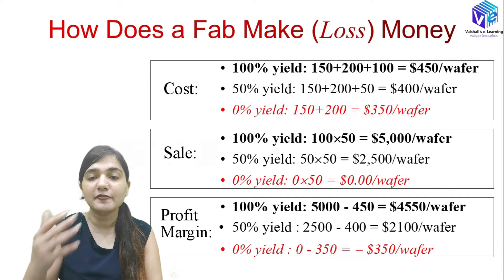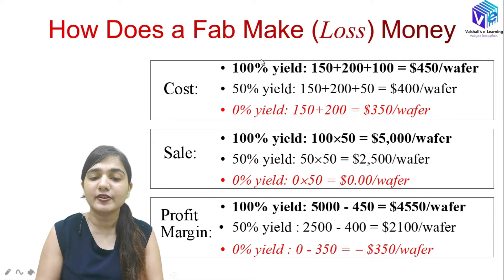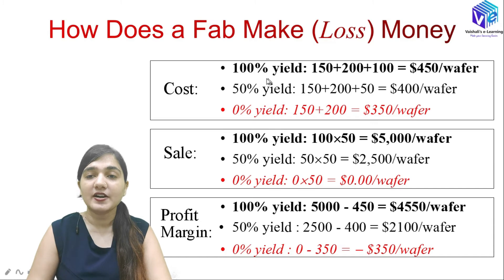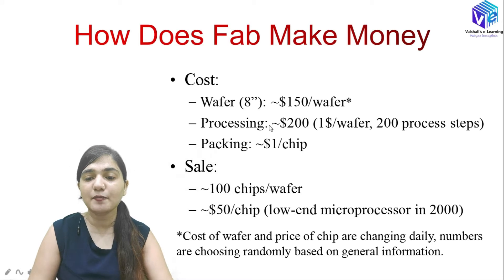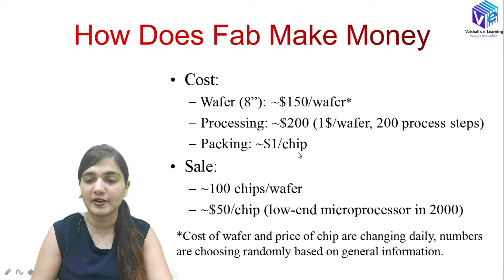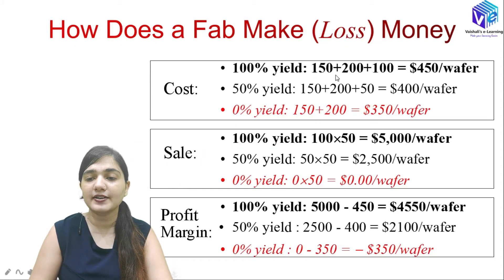Now let's look at how yield affects profit and loss. In the case of 100% yield: wafer cost is $150, processing cost is $200, and packaging cost is $100 per wafer — a total cost of $450 per wafer.